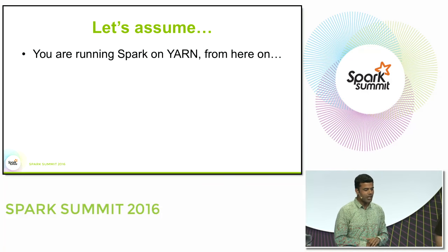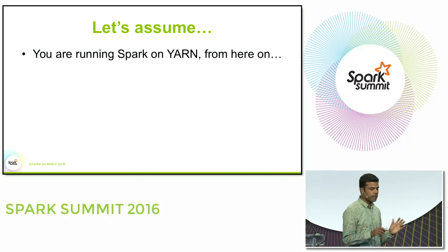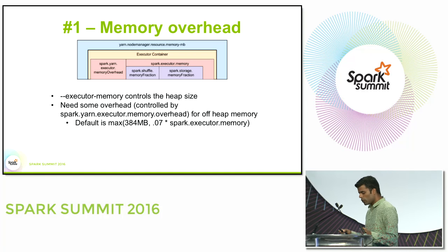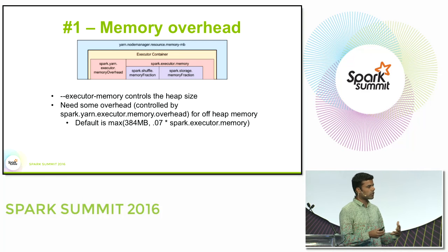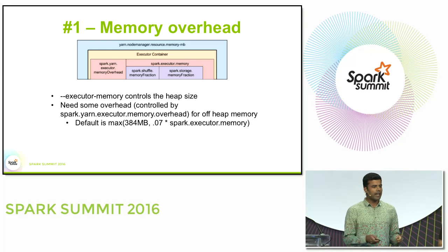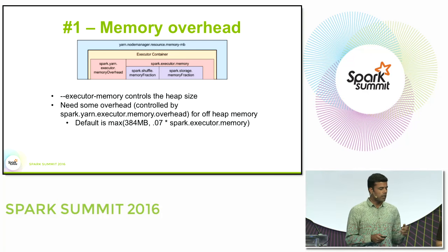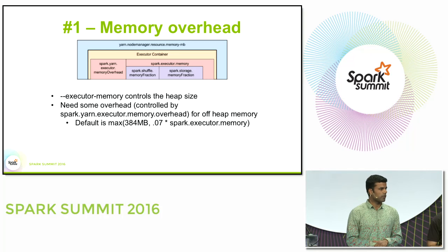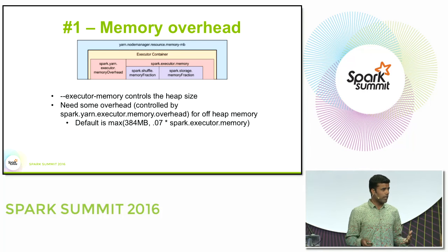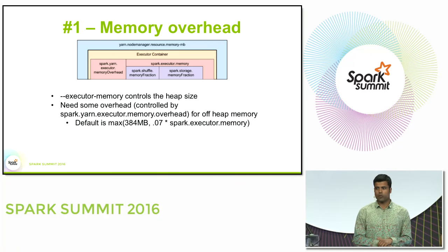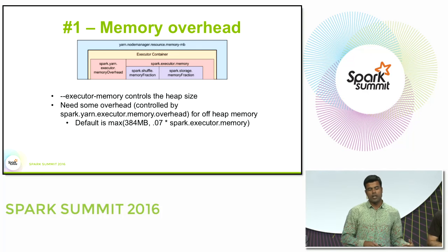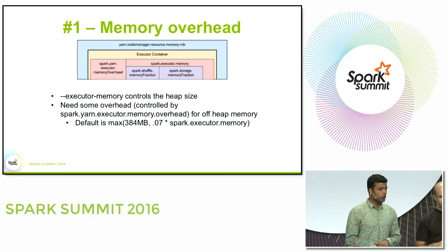From now on we'll focus on Spark on YARN. There are three things needed to get the right answer. First: memory overhead. When you request executor memory using the executor-memory parameter, YARN adds an overhead — the maximum of 384 MB or 7% of what you specified. So if your node has 64 gigs and you ask for 64 gigs, YARN will request 107% of that, causing the resource manager to reject it. You have to reduce your parameter by about 7%.